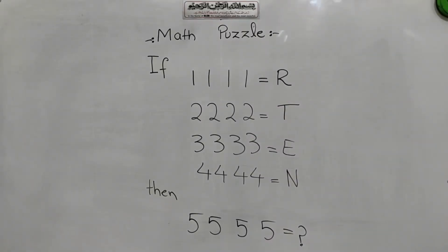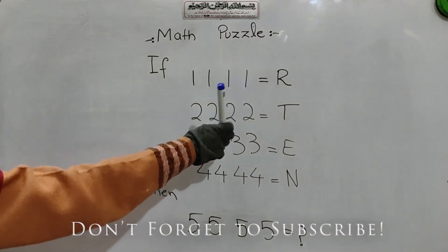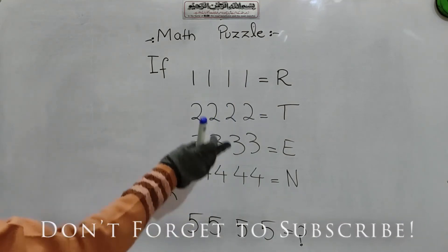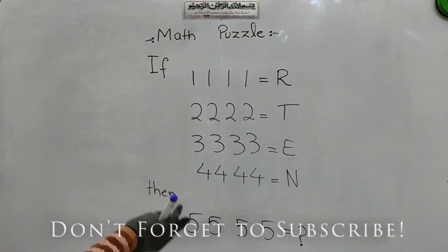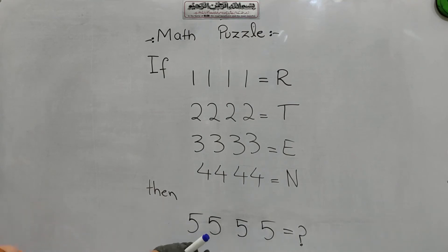So time's up and I hope you guys can solve this question. But if you can't solve this, I will solve this question for you. So let's see. If 1, 1, 1, 1 is equals to R, 2, 2, 2, 2 is equals to T and similarly these, then what will be the answer if we have 5, 5, 5, 5 is equals to question mark. So what we have to do here?